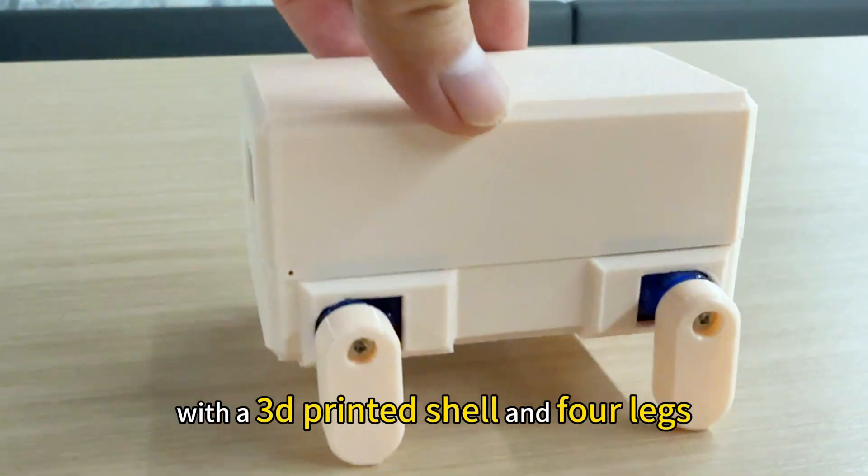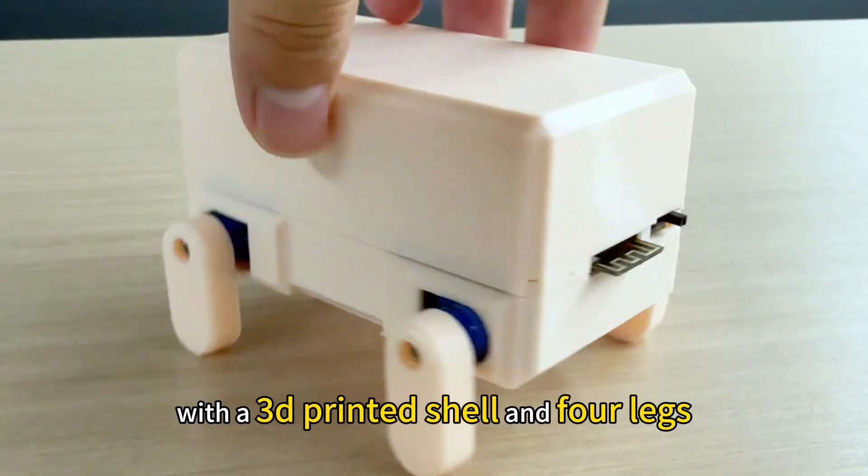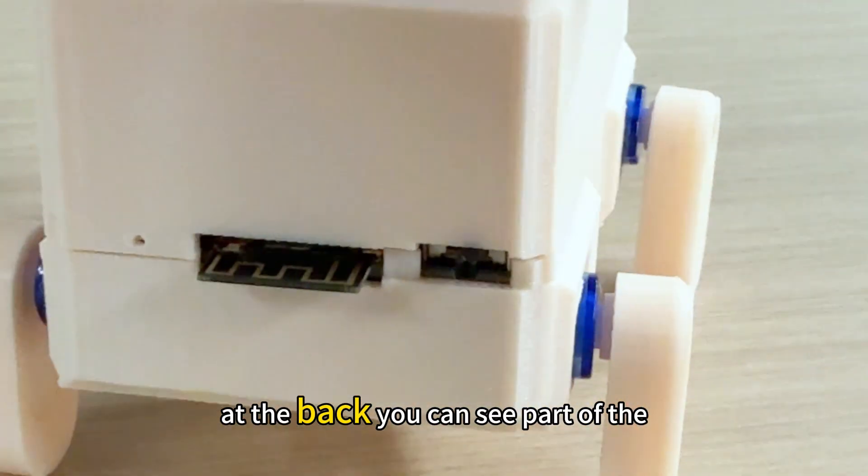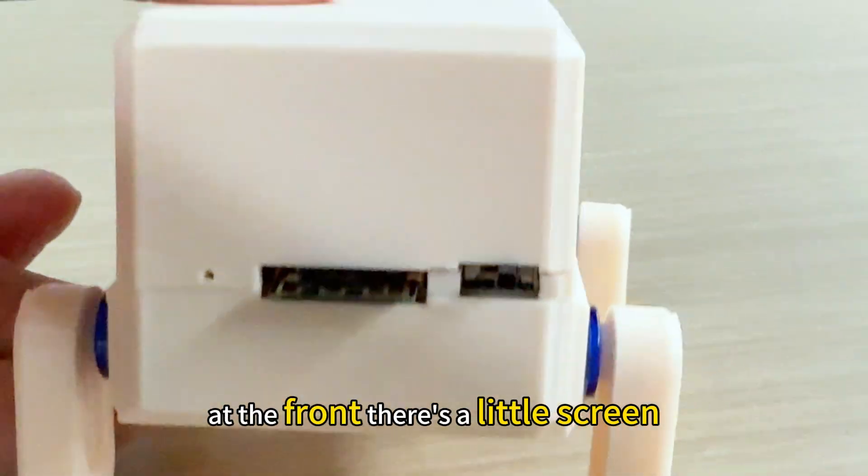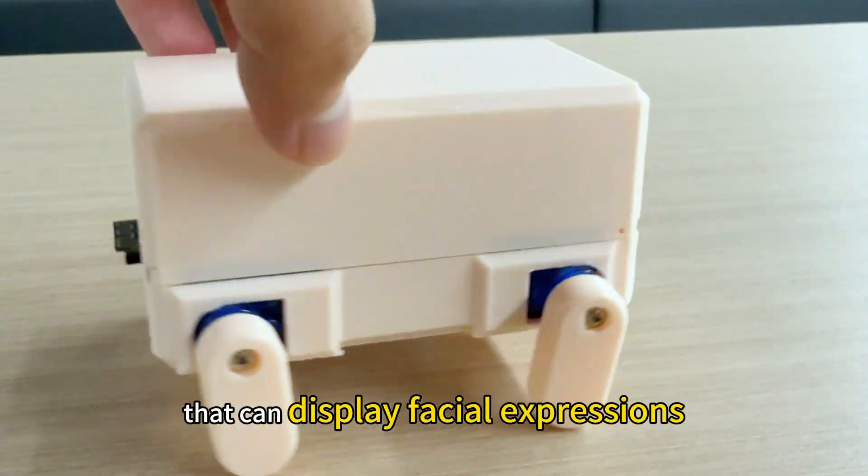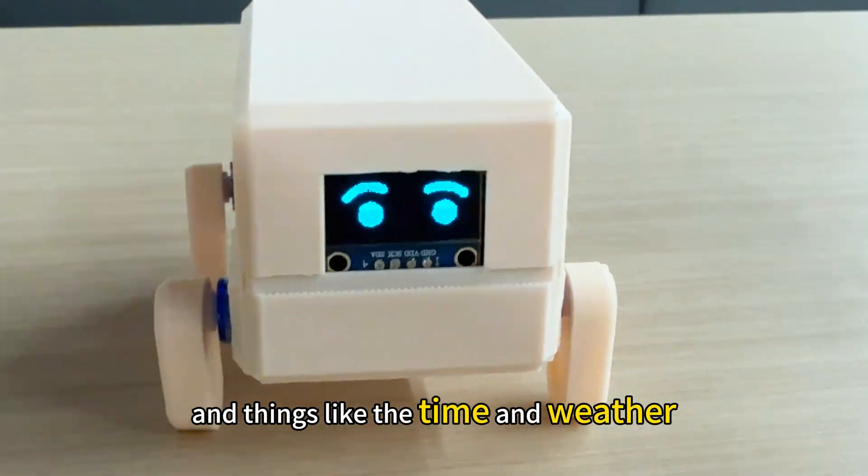This is a simple robot dog with a 3D printed shell and 4 legs. At the back you can see part of the ESP2032's antenna sticking out along with the power switch. At the front, there's a little screen that can display facial expressions and things like the time and weather.